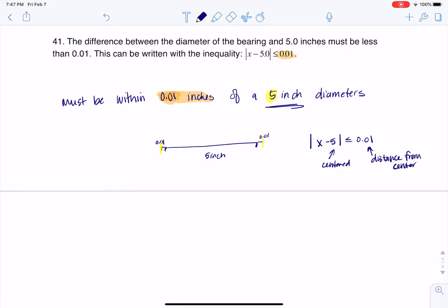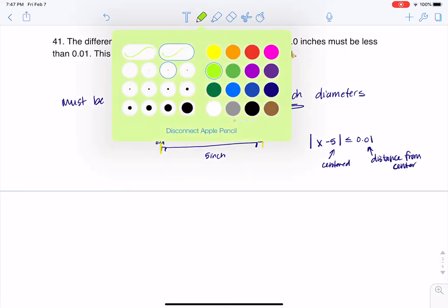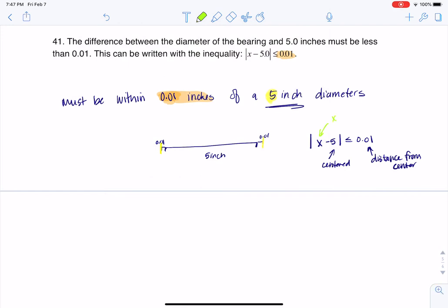So again, in a perfect world, X would equal 5. I'd make 5-inch bearings each time, and then you could see 5 minus 5 would be 0. That would be perfect, no error. But if my bearing was 5.01, I'm still within 0.01. If my bearing was 4.99, I'm still within 0.01 in terms of absolute value.